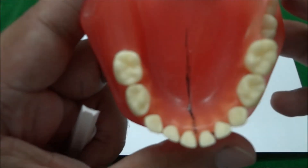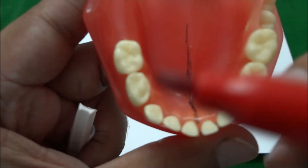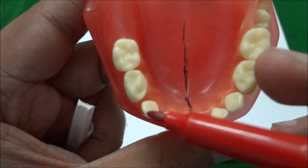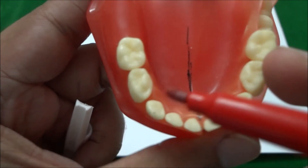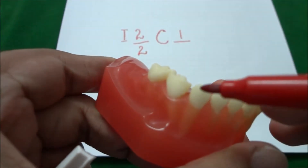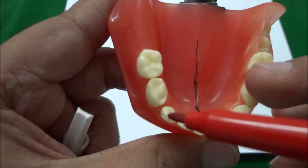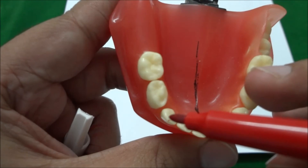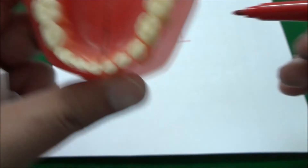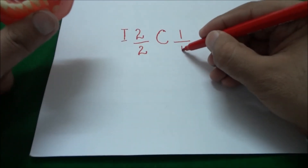In the mandibular arch, in the right quadrant, we have a canine. This is a pointed tooth, so this one is a canine. We have one canine in the right mandibular quadrant, so below this line we will write 1.